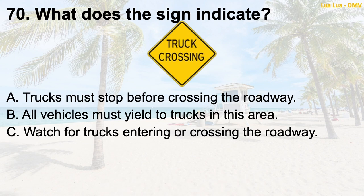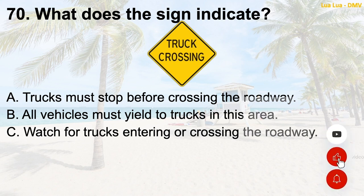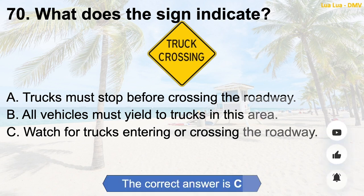Question 70: What does the sign indicate? A. Trucks must stop before crossing the roadway. B. All vehicles must yield to trucks in this area. C. Watch for trucks entering or crossing the roadway. The correct answer is C: Watch for trucks entering or crossing the roadway.